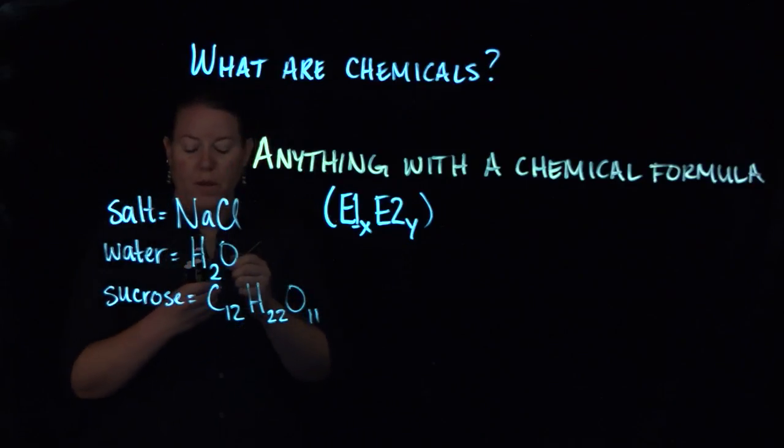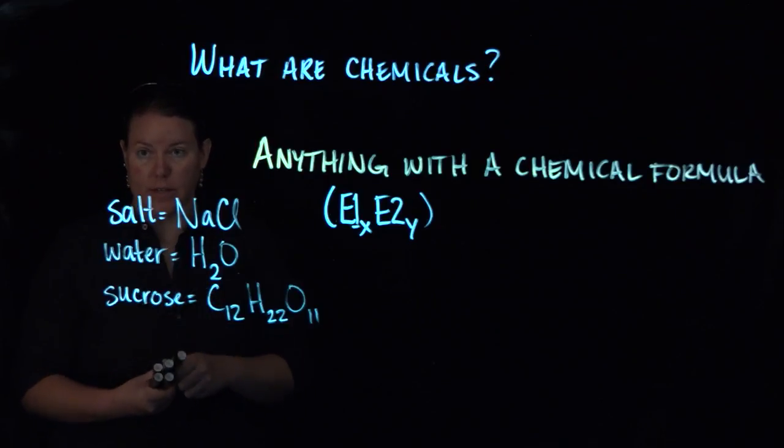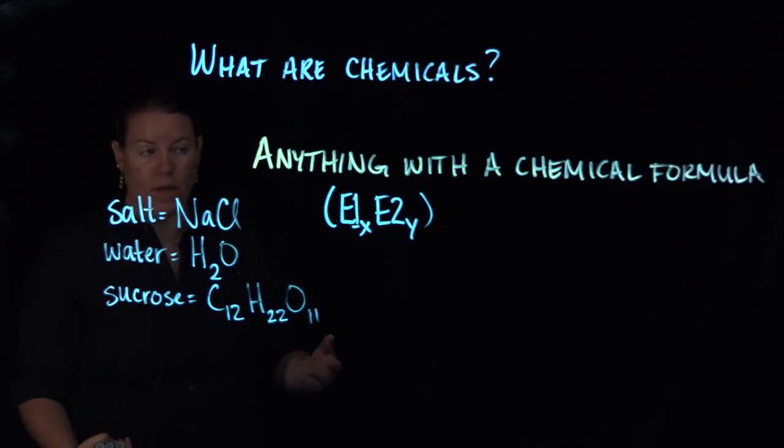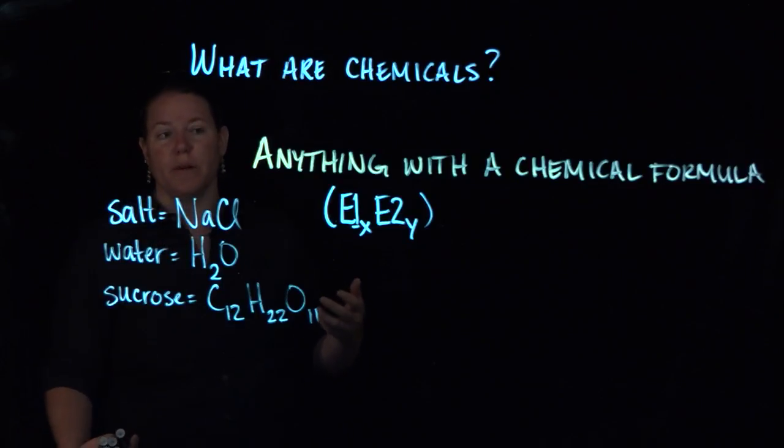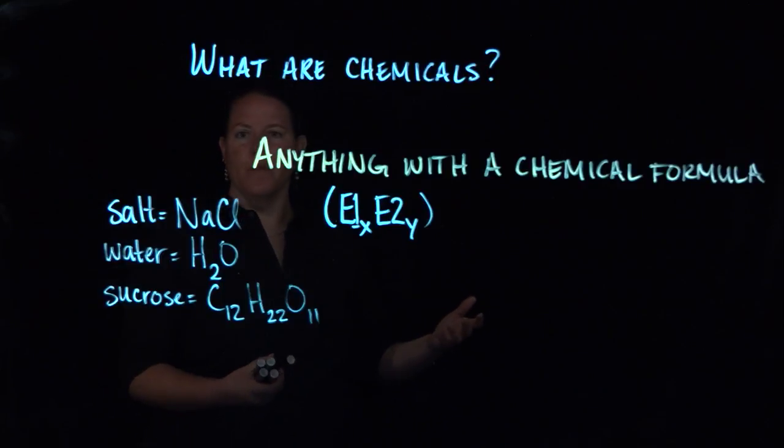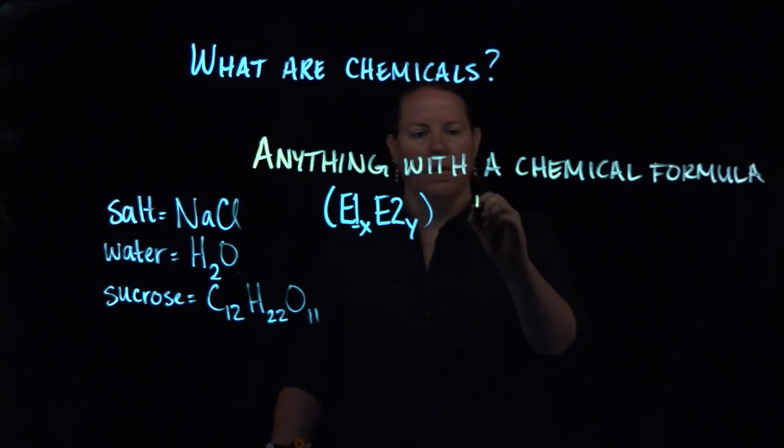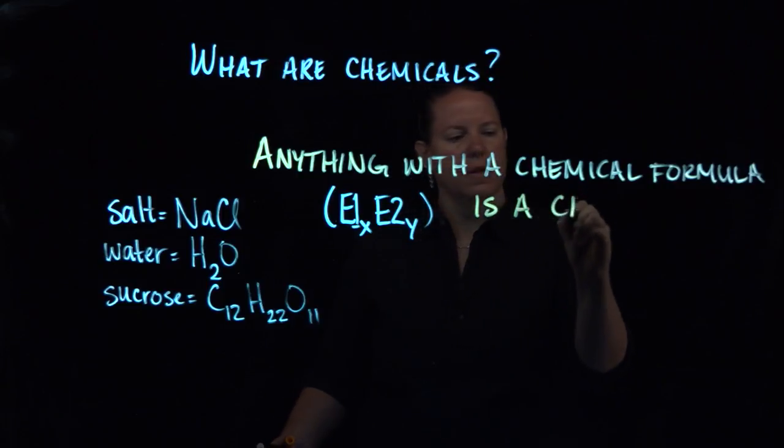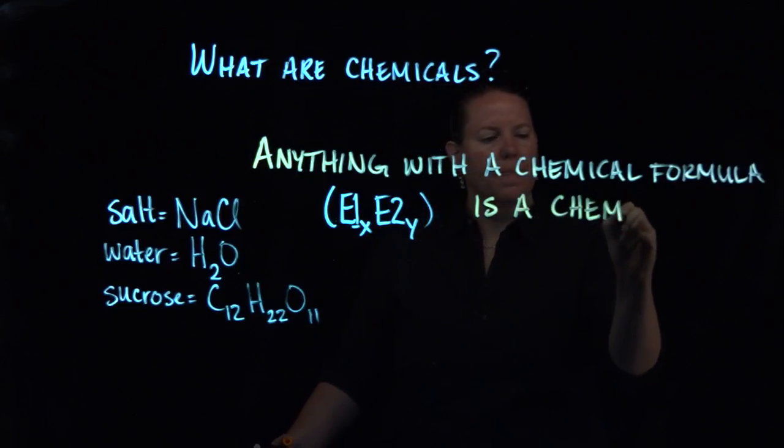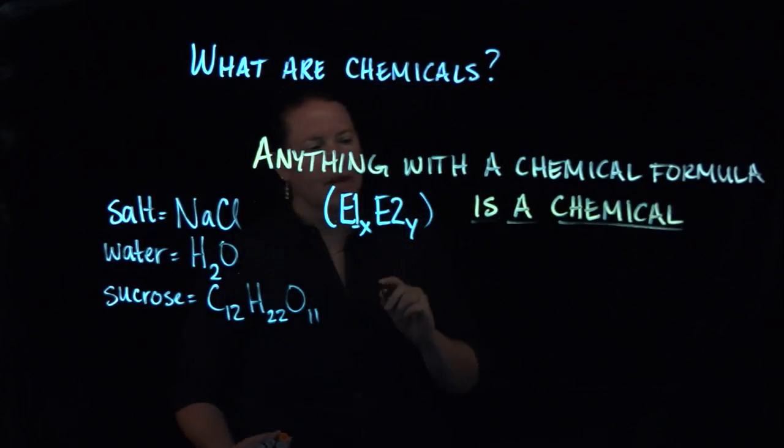Which means that anything with a chemical formula pretty much encompasses everything that exists on the planet and in the universe. Pretty much everything has a chemical formula. And so for chemists anything with a chemical formula is a chemical.